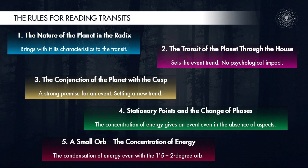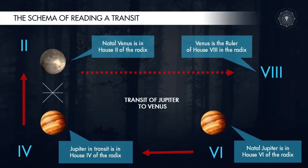The natal house receiving the transiting planet is always the main arena of action — what is happening and where, and what qualities is the world asking us to employ and develop. Jupiter passes through the fourth and creates situations of the fourth; this house becomes active during this period. When Jupiter, being in the fourth, forms an aspect to Venus in the second...